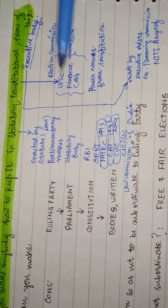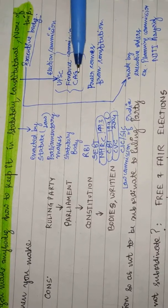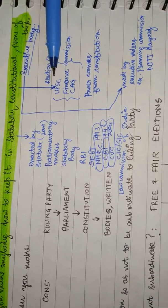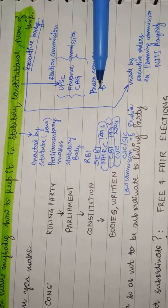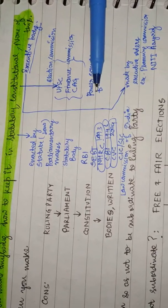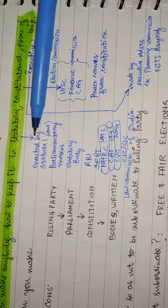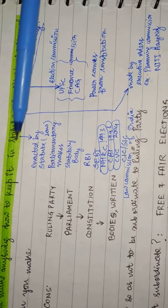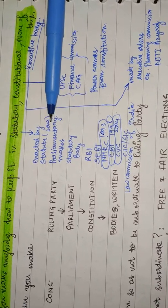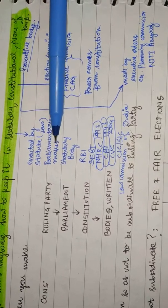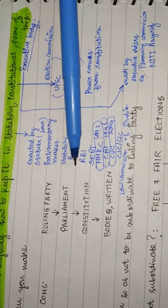When a body is made by enacting a statute - what is statute? Statute is a law. So when Parliament makes a body, it's known as a statutory body.